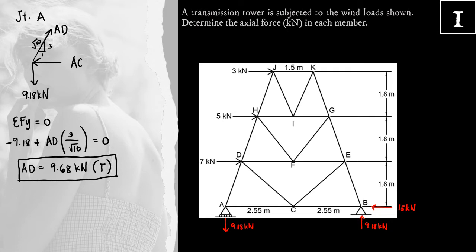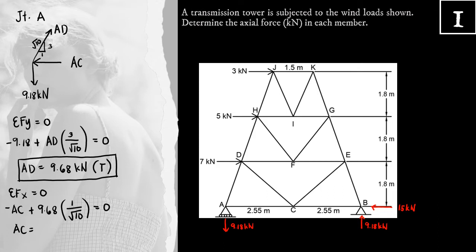Next, applying summation Fx equal to 0, positive to the right, negative to the left: negative AC plus AD times 1 over square root of 10 equals 0, where AD is 9.68. Solving, AC is equal to 3.06 kN, and this is compressive — meaning the force acts towards the joint.